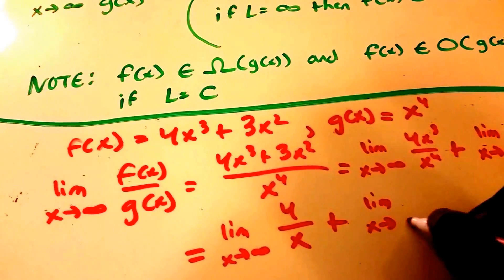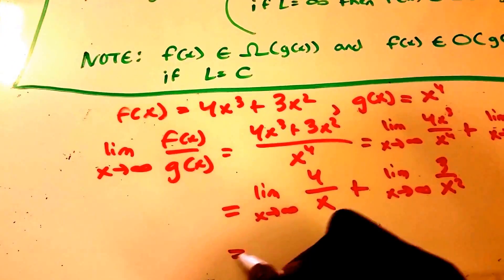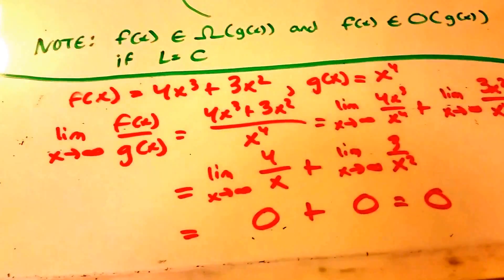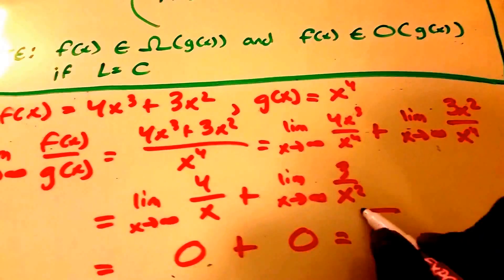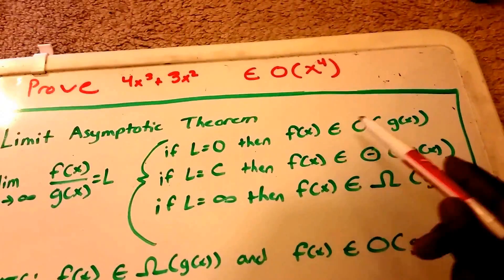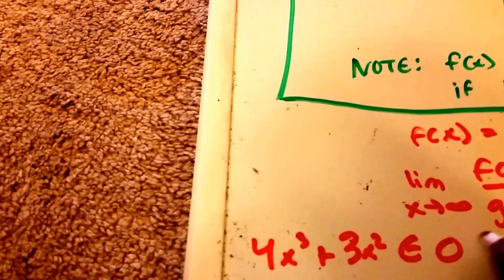Here we get 0, and here we get 0, so our limit L equals 0. Therefore, according to this rule, if L equals 0 then f(x) belongs to Big O of g(x). So 4x³ + 3x² belongs to Big O of x⁴.